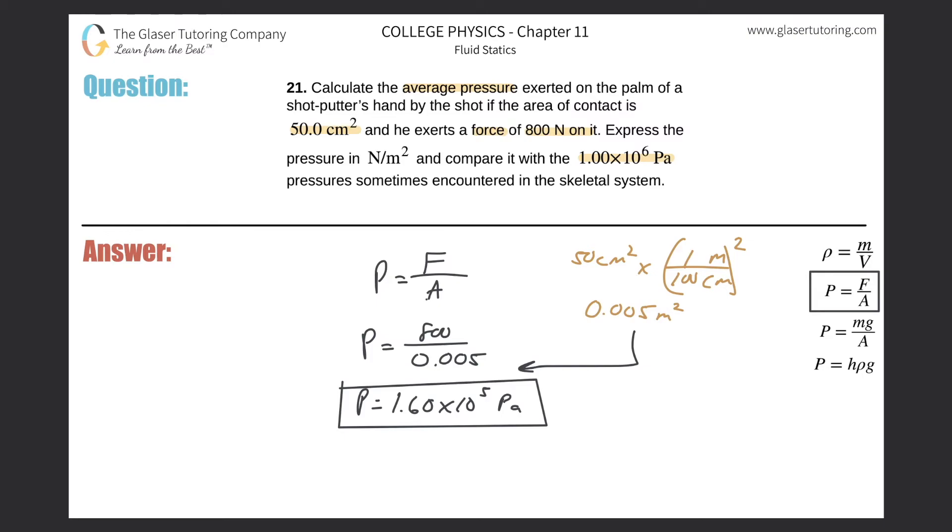So basically, anytime they're saying compare, it's kind of a little ambiguous. Compare it how, percentage wise, fractional wise? Do you want to, how many more units are there on a skeletal system than there are here by doing like a subtraction? I don't know. So I'm just going to do a fractional value, basically take the value, and it doesn't matter which way you do it. If I take the value that we calculated on the palm and then divide it by the skeletal pressure,